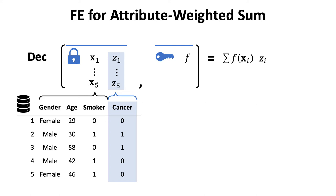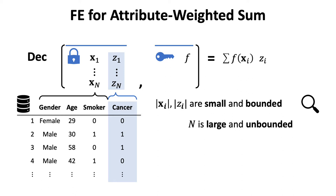Before that, we want to first motivate another important notion in this setting. For a database, the number of attributes and their data types are determined when the database was established. However, the number of records will constantly increase. Namely, xi and zi are small and have bounded size, while the number of records n is larger and unbounded. When we protect the sensitive data in the database by functional encryption for attribute weighted sum, this means that n probably grows larger and larger.